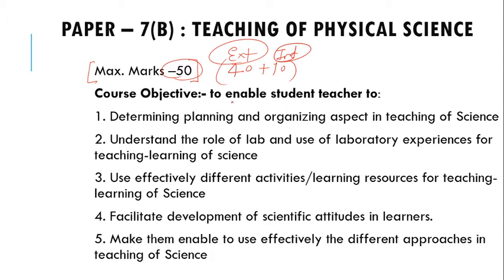The first course objective is to determine the planning and organizing aspect of teaching of science. Basically, in this syllabus you are going to learn how to plan a learning process for a science learner. The second objective is to understand the role of the lab and use laboratory experiences for teaching and learning of science — understanding the importance of the lab, how to develop a good lab, what are the attributes of a good lab, and what are effective laboratory experiences for a learner.